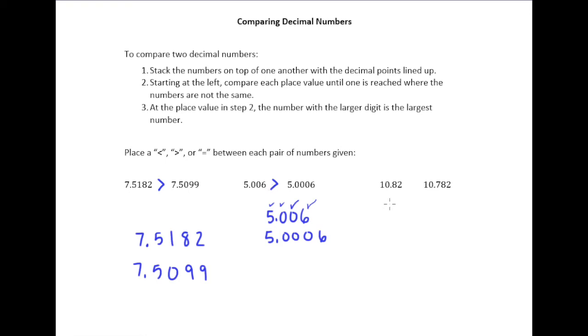And then lastly, this is where I think it becomes perhaps a little harder for our brain, is we look at these two numbers and your first inclination might be to say that this one is actually larger because 782 is larger than 82.